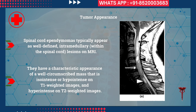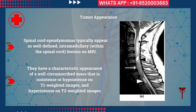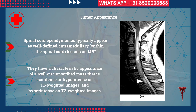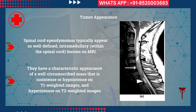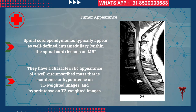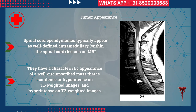Regarding tumor appearance on MRI, ependymomas are intramedullary lesions. They typically appear as well-defined masses — you can clearly appreciate the margins of the tumor in the sagittal, axial, and coronal cuts. They have a characteristic appearance of a well-circumscribed mass that is iso-intense to hypo-intense on T1-weighted images and hyper-intense on T2-weighted images.